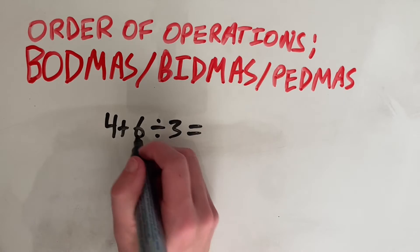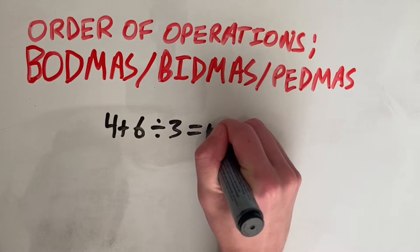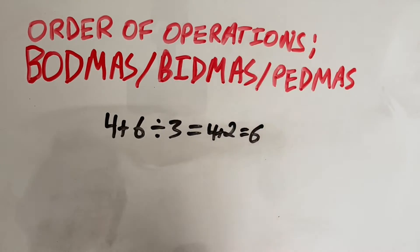the order of operations says that division always comes before addition. So to solve this, you would have to do 6 divided by 3, which is 2, and then you would have 4 plus 2, which gives you 6.